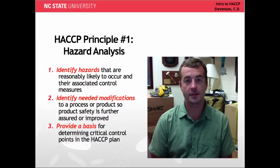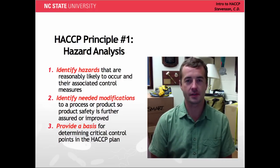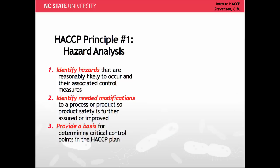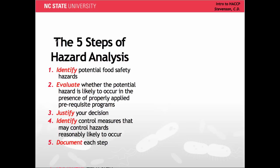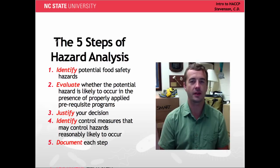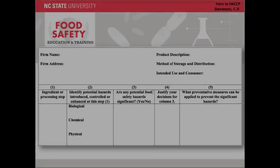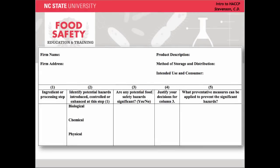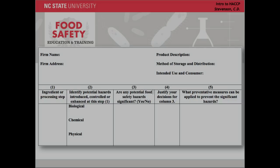In the previous lesson on HACCP principle number one, we learned how conducting a hazard analysis systematically identifies and evaluates all hazards in a food process and begins to determine what control measures will handle these hazards. The five steps of hazard analysis led us towards determining whether a hazard was reasonably likely to occur. For every hazard that is likely to occur that was identified in the hazard analysis, there must be one or more critical control points where the hazard will be controlled.